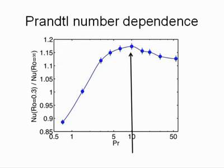We find that the effect of Ekman pumping is highest at an intermediate Prandtl number, which is close to the Prandtl number of water. This suggests that two competing mechanisms control the effect of Ekman pumping.